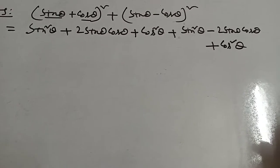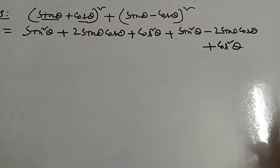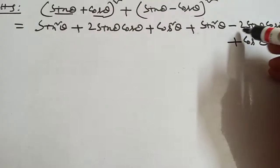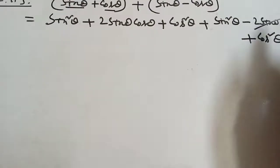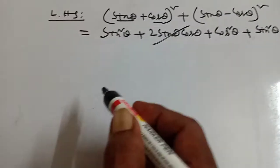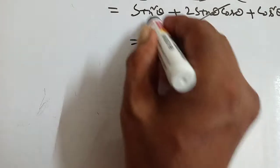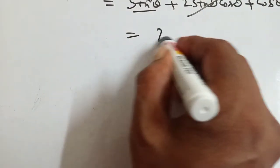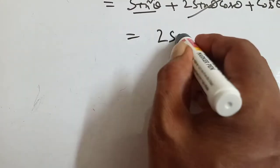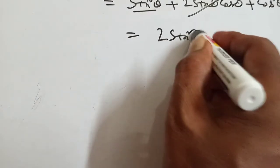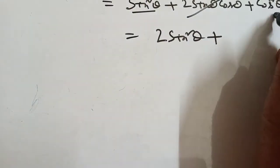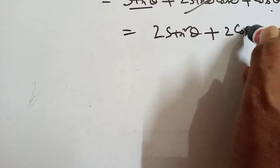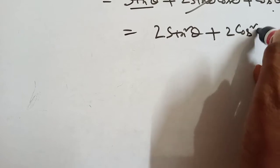Using a plus b whole square and a minus b whole square expansions and grouping: we get 2 sin squared theta plus 2 cos squared theta.